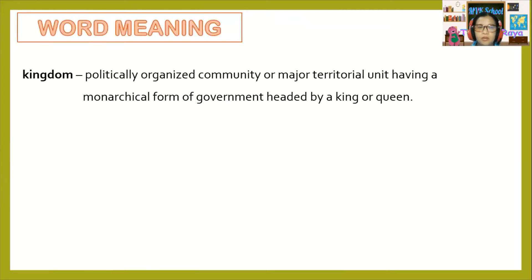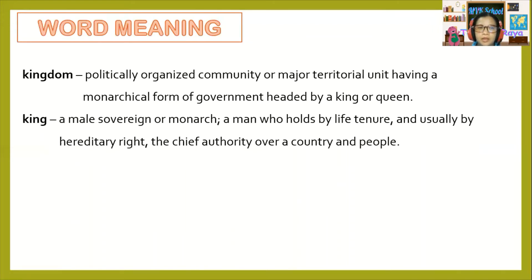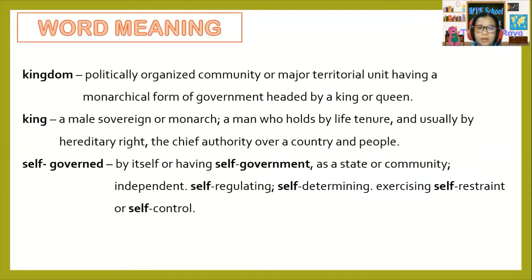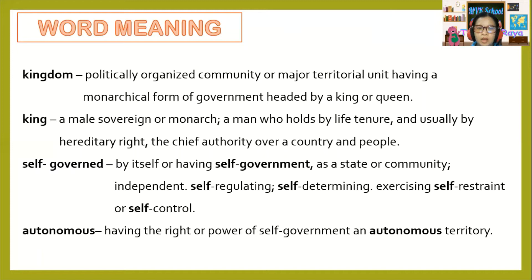Word meanings: Kingdom — a politically organized community or major territorial unit having a monarchical form of government headed by a king or queen. King — a male sovereign or monarch, a man who holds by life tenure and usually by hereditary right the chief authority over a country and people. Self-governed — governed by itself or having self-government, as a state or community; independent, self-regulating, self-determining, exercising self-restraint or self-control. Autonomous — having the right or power of self-government, as an autonomous territory.